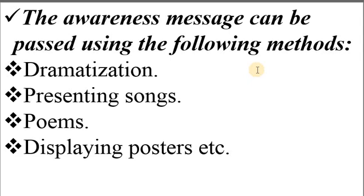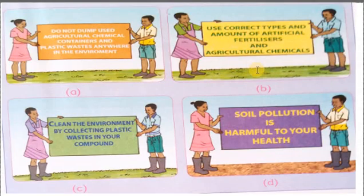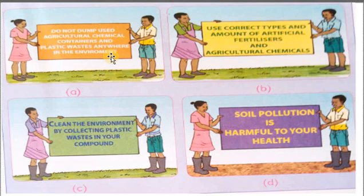The fourth method is displaying posters, which is the simplest or easiest method. You can print or write the awareness message on posters and display them to farmers so that they receive the awareness message. I'll show you an example here — you can see four different posters made by students, Grade 7 students. The first one says: 'Do not dump used agricultural chemical containers and plastic wastes anywhere in the environment.'